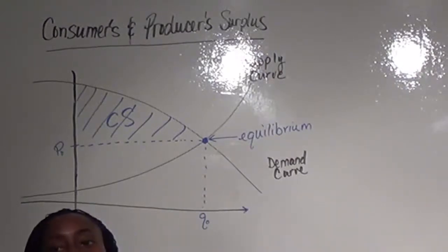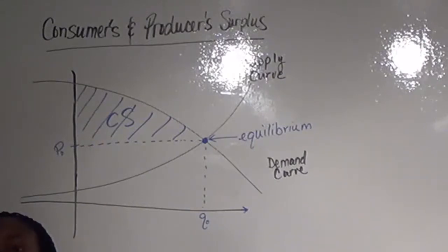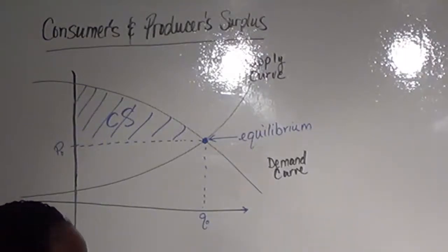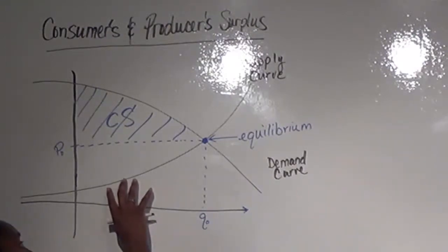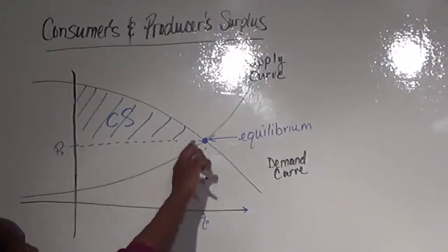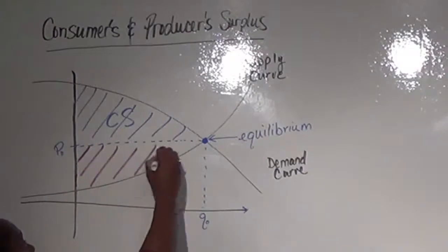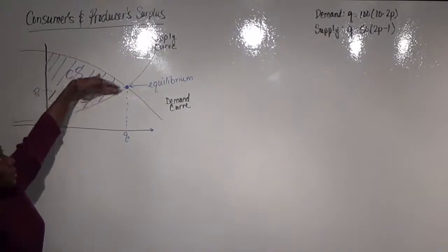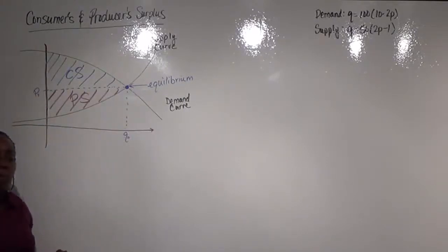Our producer surplus is the total gain to producers who are willing to supply quantities lower than the equilibrium price — basically, they're giving a discount to consumers. If we're looking at our supply and demand curve, it's the people who are supplying more than what the supply is asking for but less than the equilibrium price. So we're looking at this region in here — that's our producer surplus.